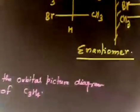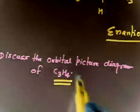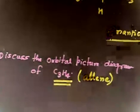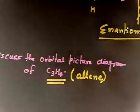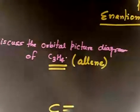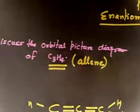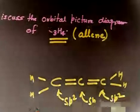Let us discuss the next one: discuss the orbital picture diagram of C3H4, which is allene. Let us discuss the orbital picture for allene. You know basically, so I will not give you time — those who do not know, let us listen. You have C double bond C double bond C, with hydrogens, and this carbon is sp2, this central carbon is sp, and this end carbon is sp2.